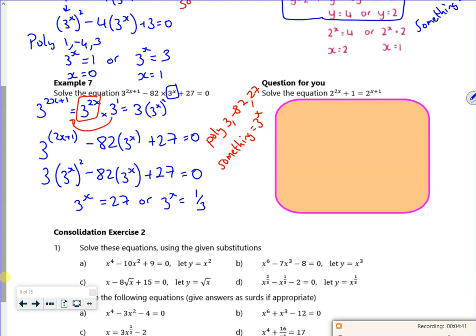So that's equal to 3^x. So you know that 27 is 3 cubed, so 3^x is 3 cubed, so that must mean that x is 3. For the 3^x is a third, we know that 3^x is 3 to the power minus 1. So if 3^x is 3 to the power minus 1, then x must be minus 1 there.